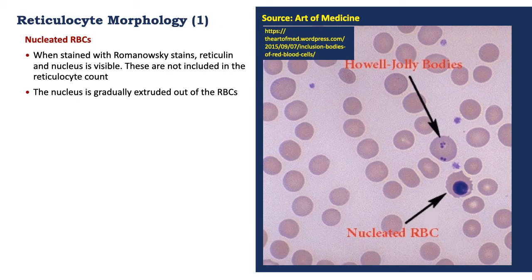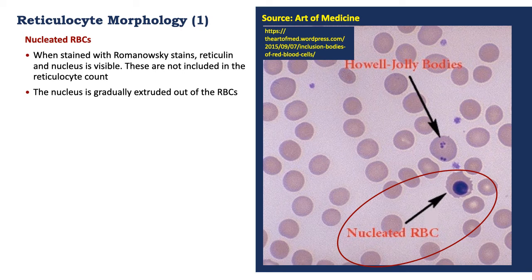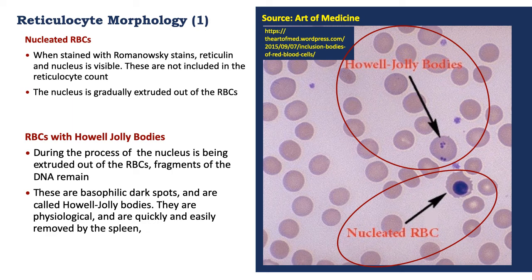Let's look in detail at the morphology of reticulocytes. They can appear as nucleated red blood cells, as shown in the oval below. These will appear during staining with Romanowsky stains, and at times the nucleus is very visible. At times the reticulin strands may be visible, and such cells are not included in the reticulocyte count. This nucleus will be gradually extruded out of the red blood cell. During the process of extrusion, fragments of the nucleus may remain in the red blood cell, and these are known as Howell-Jolly bodies, shown in the second oval.